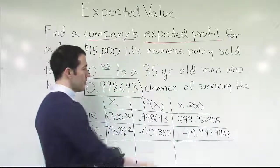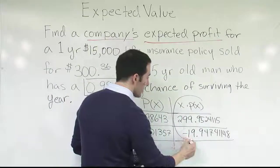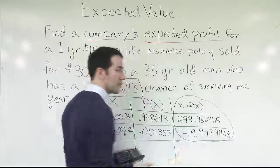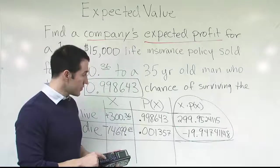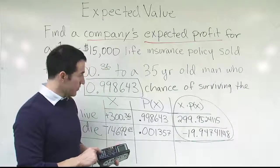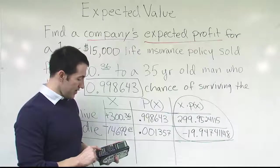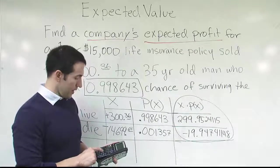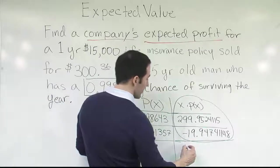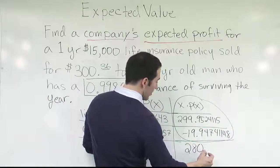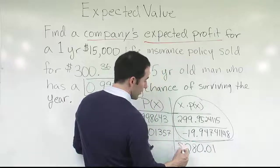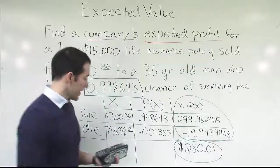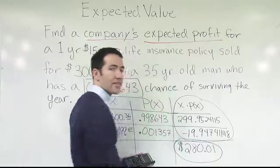To finish the average, we sum this column to get the average value. So we do $299.9524115 minus $19.9474114, and when we finish, we get $280.01. The last digit rounds up because of the 0.005, so about $280.01 is what the company will make per policy.